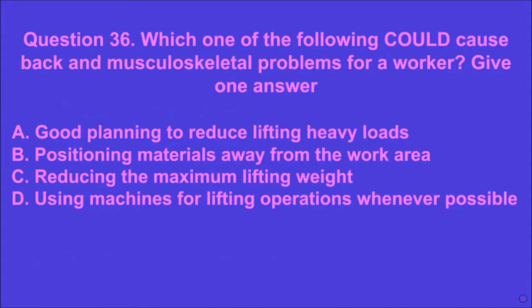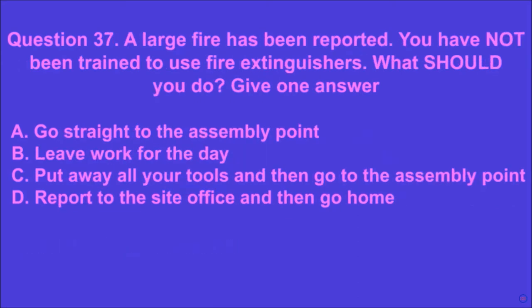Question 36: Which one of the following could cause back and musculoskeletal problems for a worker? Give one answer. A: good planning to reduce lifting heavy loads, B: positioning materials away from the work area, C: reducing the maximum lifting weight, D: using machines for lifting operations whenever possible. B is the correct answer.